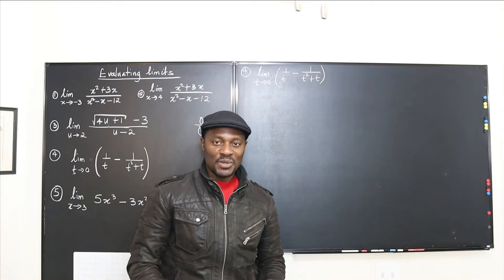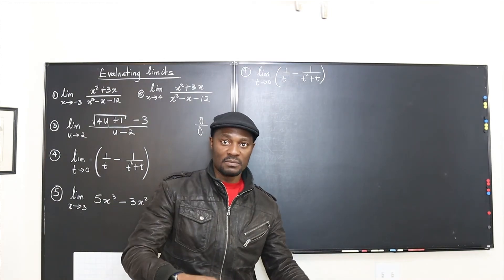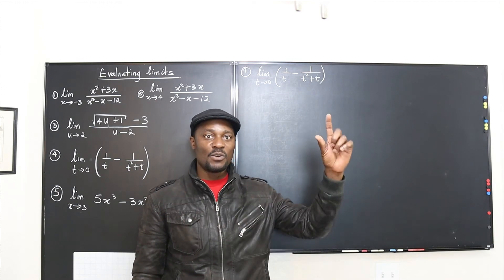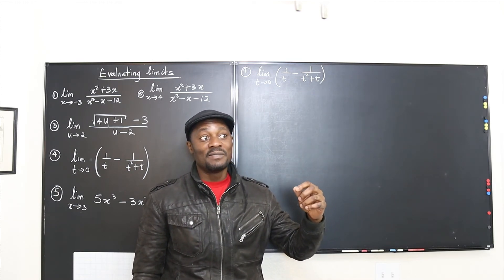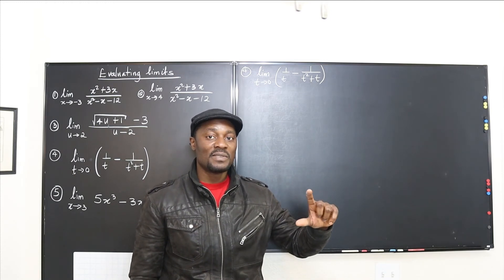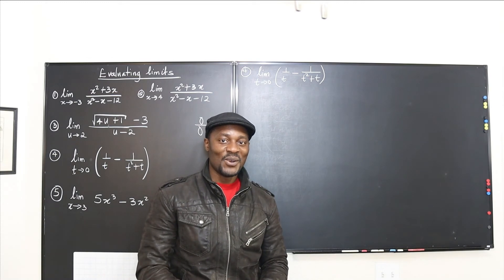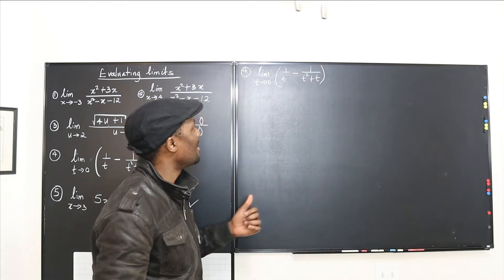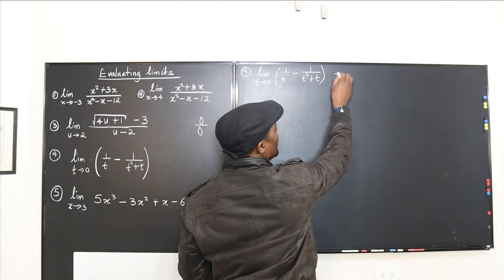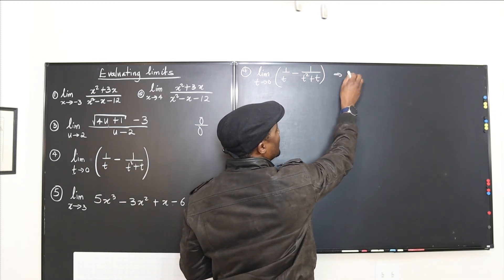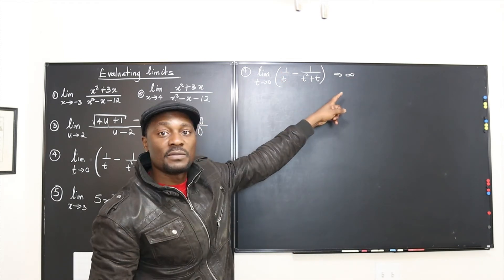Let's go to the last question. This question presents a different kind of indeterminate form. We talked about 0 over 0 — well, it's the same as dividing infinity by infinity or subtracting infinity from infinity. If we do direct substitution here, this term gives 1 over 0 which is infinity, and the other term also gives 1 over 0, also infinity.